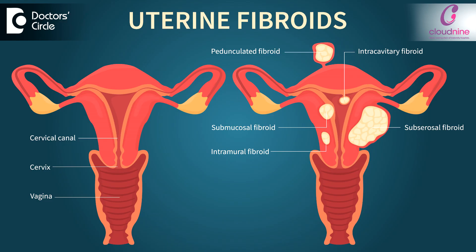Uterine fibroids are classified depending on their location: intramural fibroids, subserosal fibroids, submucosal fibroids, pedunculated fibroids, cardinal fibroids, broad ligament fibroids, and cervical fibroids.